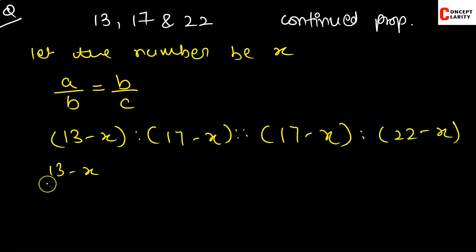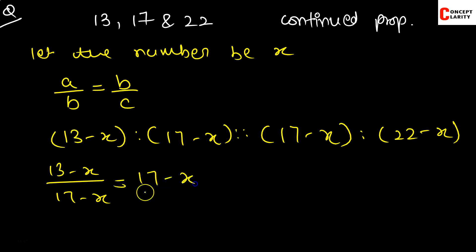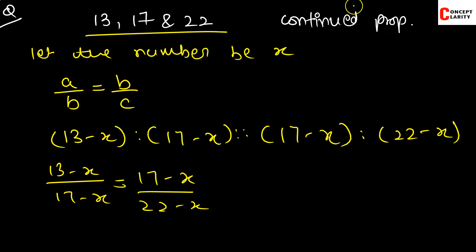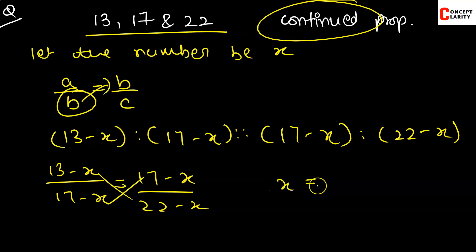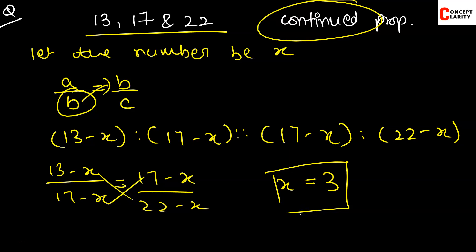We cross multiply: (13 plus x) into (22 plus x) equals (17 plus x) squared. On solving, x comes out to be 3. So x equals 3 is your answer. That is the normal concept of how to solve continued proportion problems — addition and subtraction.